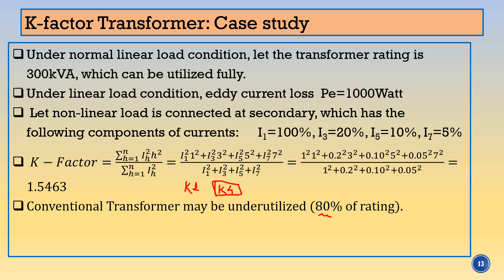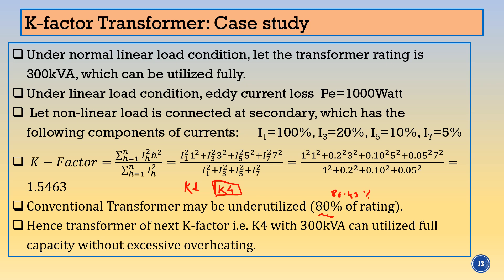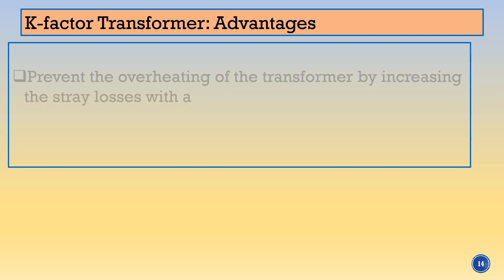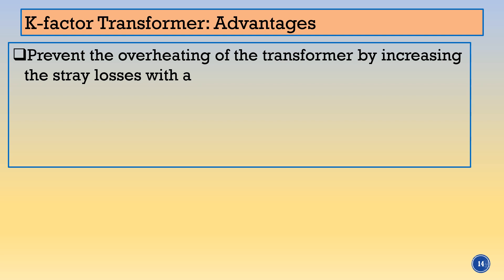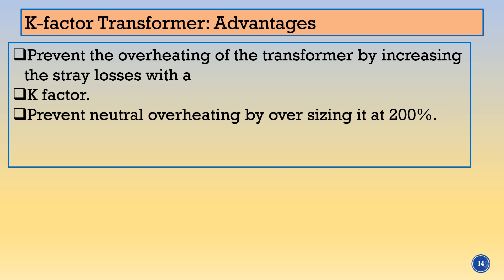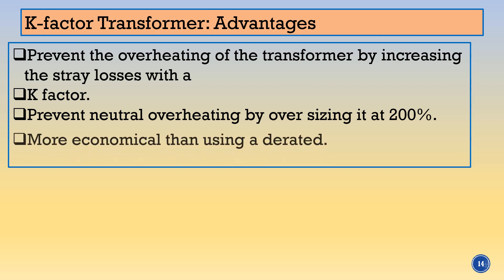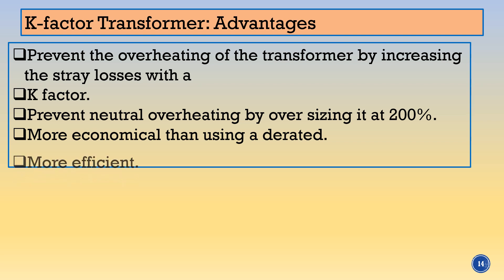If we use the conventional transformer, as seen in the previous example, only 80.43% capacity can be used. But if we use the K4 type, then the full 300 kVA capacity can be utilized — the transformer can be utilized up to 300 kVA without excessive overheating. That is the main advantage. If we load a normal transformer beyond 80%, overheating may occur and the transformer life is sacrificed. Using the K rated transformer, we can utilize it fully.